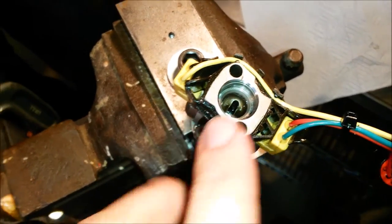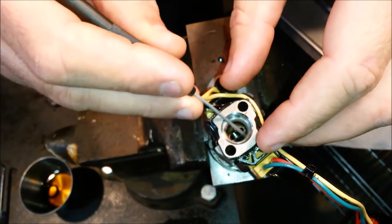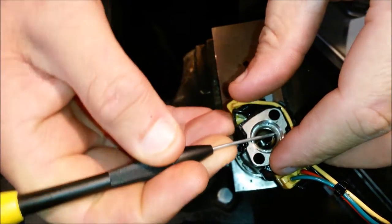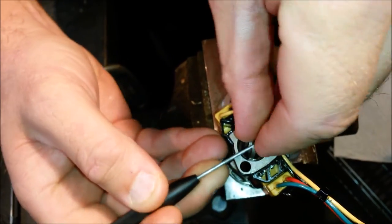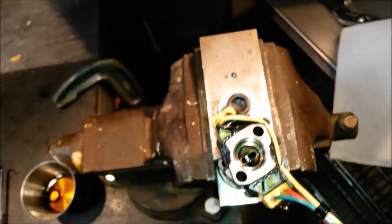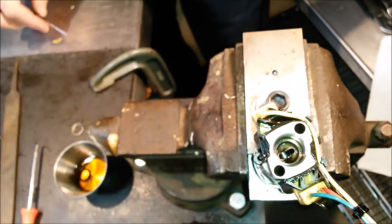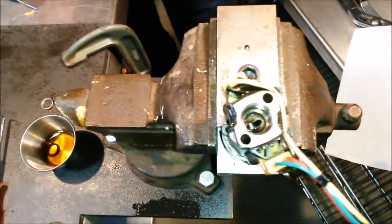Once the top seal is out, you're going to want to pull that beveled washer out. Sometimes they like to fight you. I can do it with my pinky. I just stick my pinky in and it pulls right out. If you have big fingers, use a pick or a screwdriver.